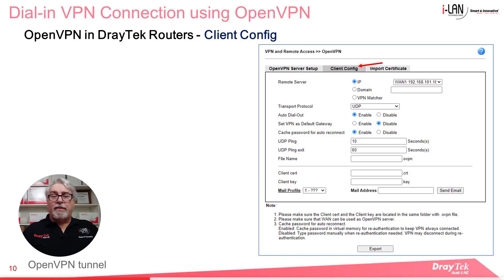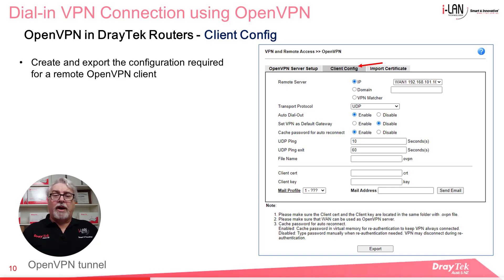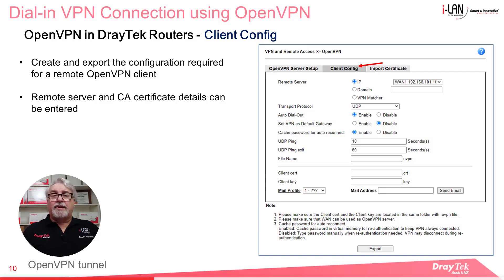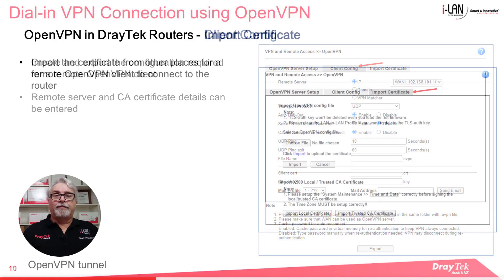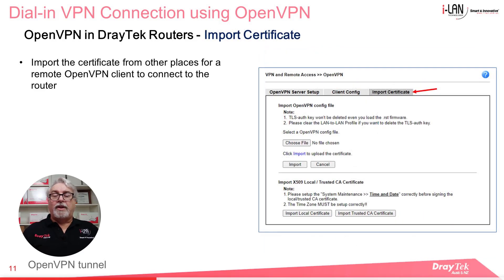In the Client Configuration menu, you can create and export the configuration required for a remote OpenVPN client to connect to the router, which makes the process very easy. Details such as the remote server and CA certificate details can be entered. In the Import Certificate menu, you can import the certificate from other places for a remote OpenVPN client to connect to the router.